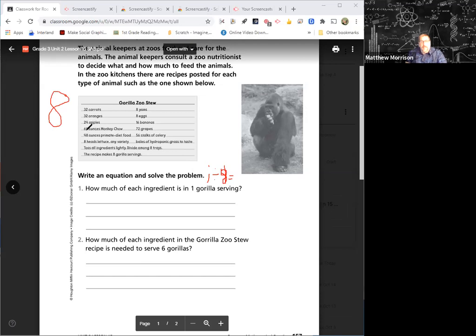When we look at each of these answers up here, we have to divide by eight. Now I'm not going to make you write an equation for each of them. There's a lot of equations, so you just have to divide them by eight. So we have 32 carrots divided by eight. So 32 divided by eight is four carrots.